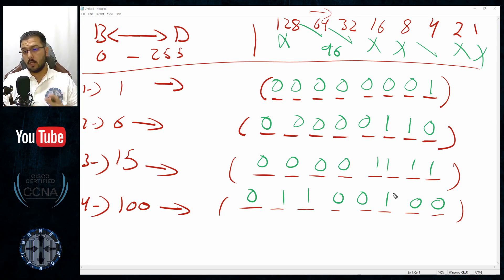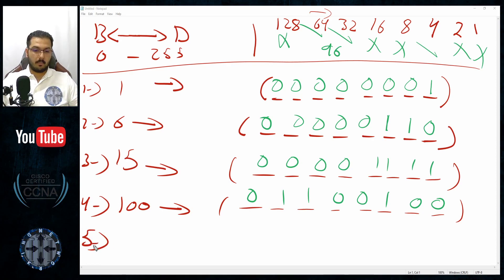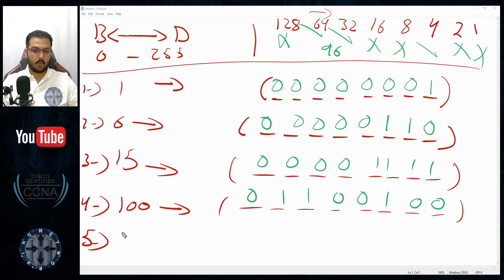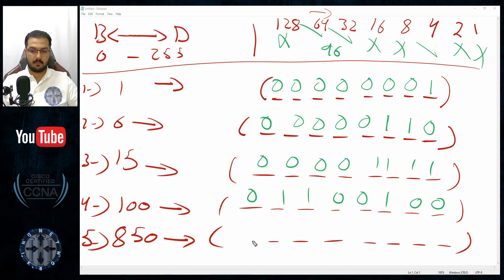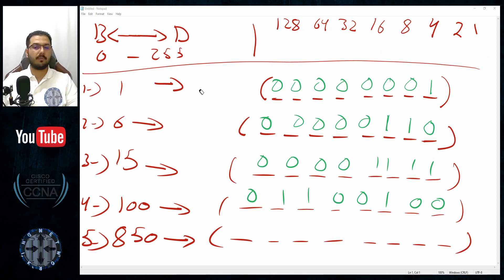One last example before I end this video — after this you might need a break. Example number five: the number 850. This number exceeds what eight bits can represent, since combining all eight values gives only 255. But this example is to show how a computer would understand 850 for general purposes.